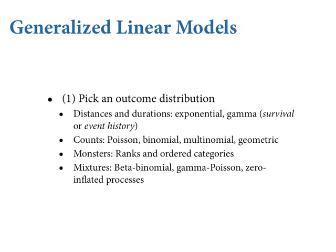Zero-inflated processes are cases where certain outcomes — like zeros — can be produced by multiple processes and you want to model all of them. The most familiar case: if you're walking transects counting owls, there could be zero owls there, or you could be bad at counting owls, and those zeros could be measured in error. You've got to account for that. Now here's the new stuff: the relationship between the predictions of the model, the scale of the outcomes, and the parameters inside the linear model is going to change with most of these other distributions.